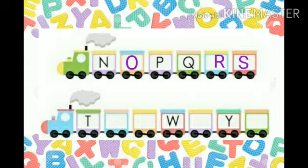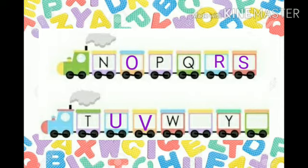T, then U. What comes after U? After U comes V. This is letter V. Kids, do you know the letter after V is called W. After W comes X. Then Y. And in the end comes Z.